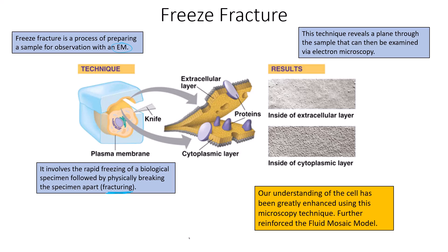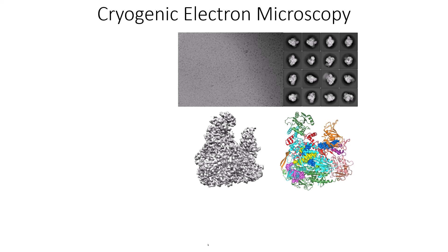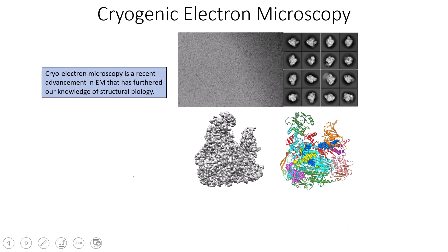Freeze fracture specifically has reinforced the idea of the fluid mosaic model, which we'll discuss in detail in a later video. The fluid mosaic model describes the cell membrane with all of its components — proteins and such. Cryogenic electron microscopy is another technological advancement used in tandem with microscopy that furthered our knowledge of structural biology.